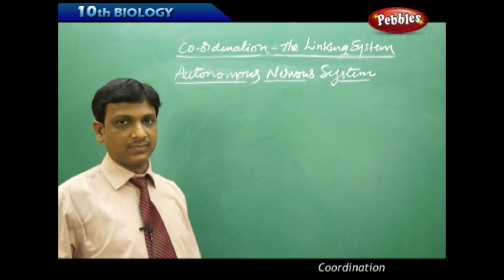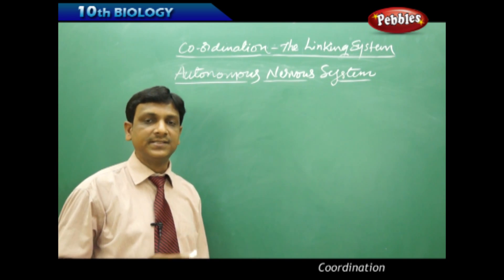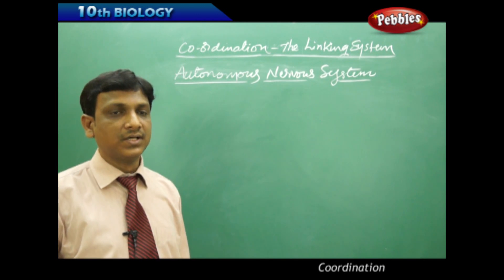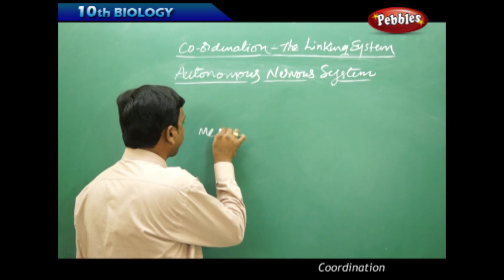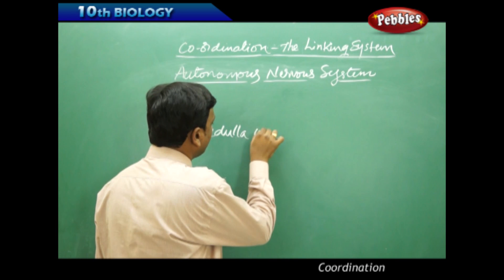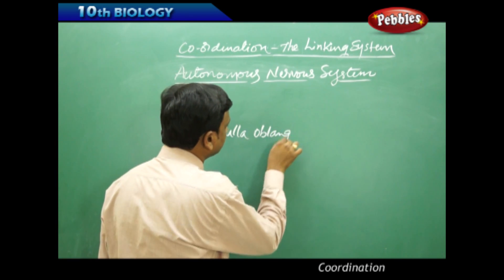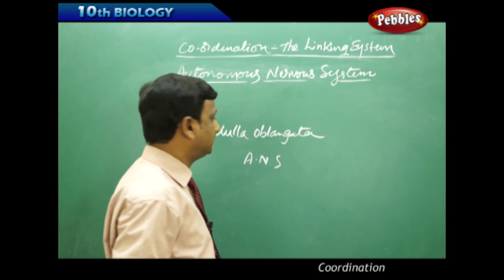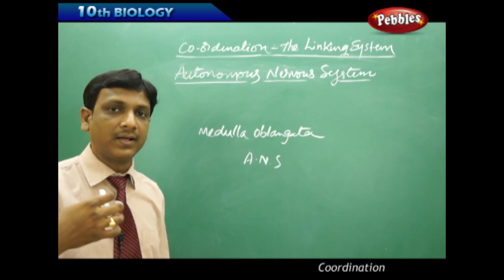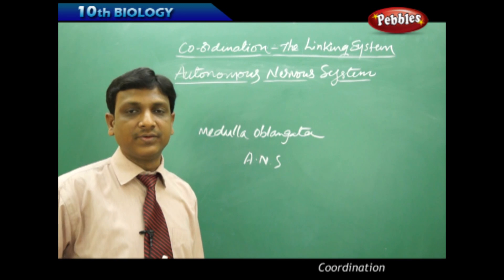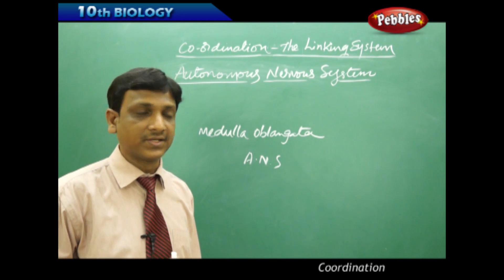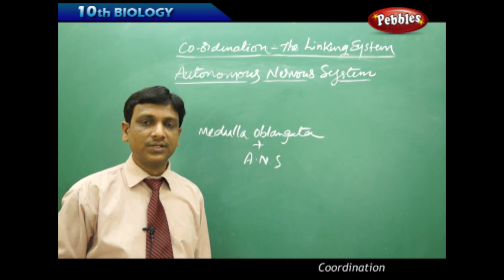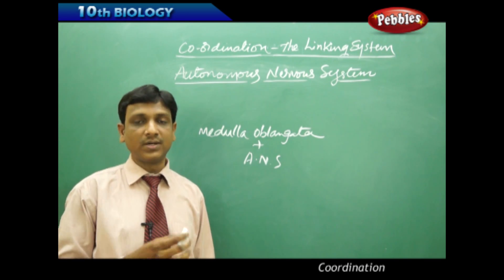The autonomic nervous system is the nervous system which controls involuntary activities. Mostly the medulla oblongata and the autonomic nervous system together control the automatic involuntary activities of our body. All the involuntary actions are controlled by the medulla oblongata plus the autonomic nervous system.